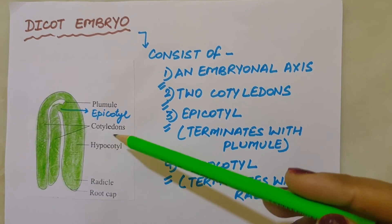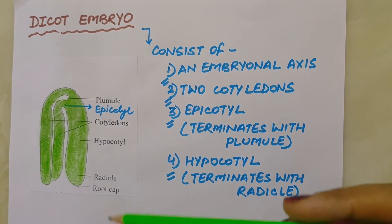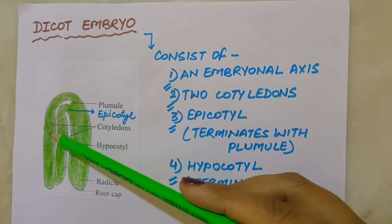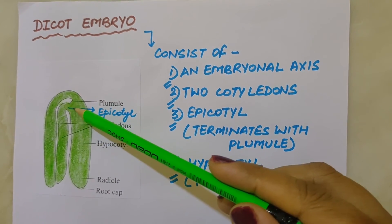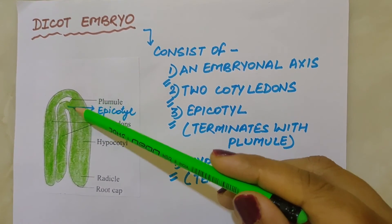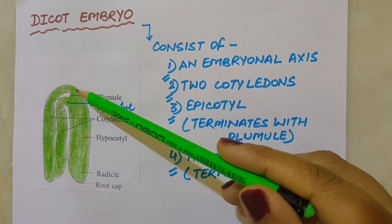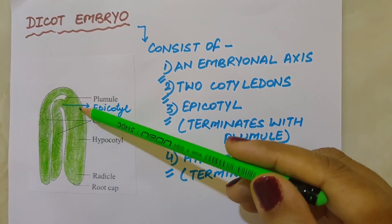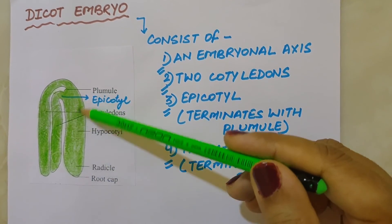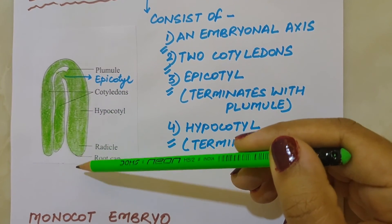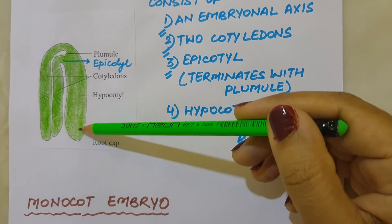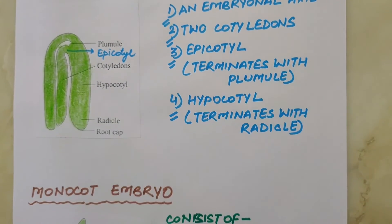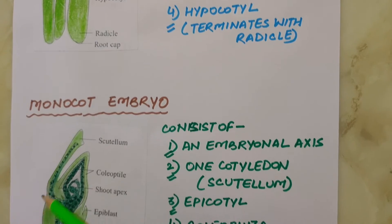A typical dicot embryo consists of an embryonal axis and two cotyledons. The portion of the embryonal axis above the level of the cotyledons is called the epicotyl, which terminates into the plumule or stem tip. The cylindrical portion below the level of the cotyledons is the hypocotyl, which terminates at its lower end in the radicle or root tip, and the root tip is covered with a root cap.